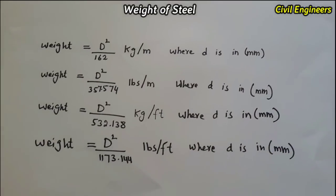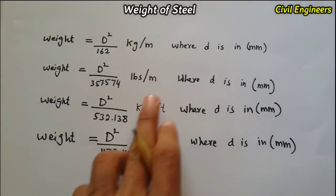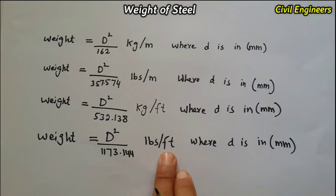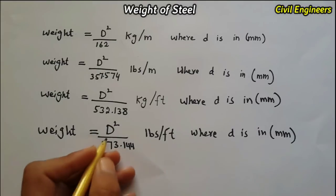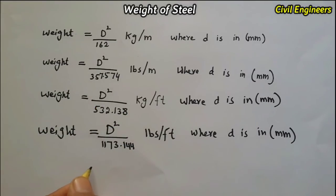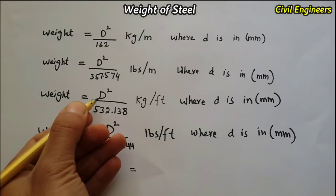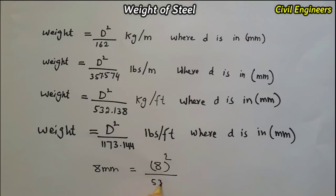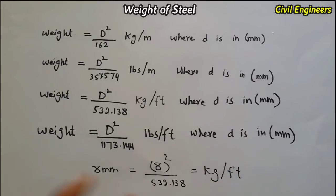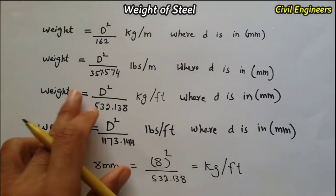So we have these formulas to find out the weight of steel in kg per meter, lbs per meter, kg per feet, and lbs per feet. For example, if we take D equals 8 mm and need the weight in kg per feet, we use: 8 squared divided by 532.138, which gives us the kg per feet weight of steel.